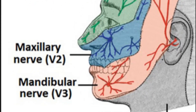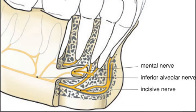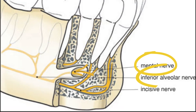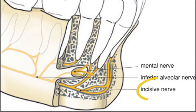So you have two main types of nerve blocks: the maxillary block and the mandibular block. Besides the main ones, you also have regional blocks. It is important to understand the branches — for example, the mental nerve, the inferior alveolar nerve (which is the most common one), the incisive nerve, and also the lingual and buccal nerves.